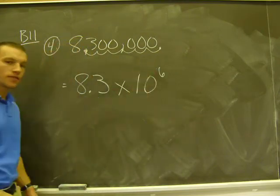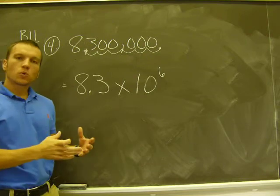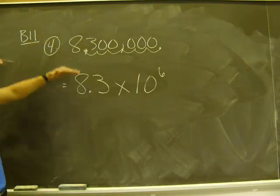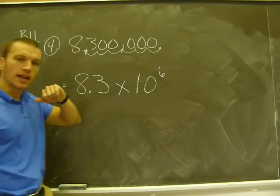I'm going to make it positive. I try not to worry about counting to the right and to the left. I look at my number and say, that's a big number. The number to start was 8,300,000.